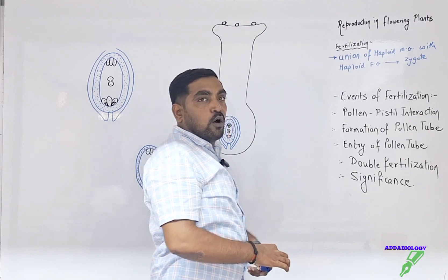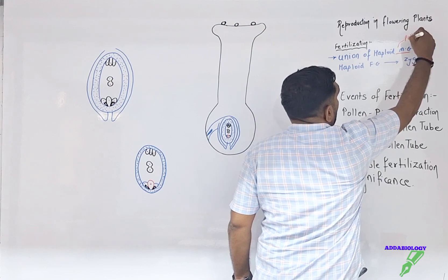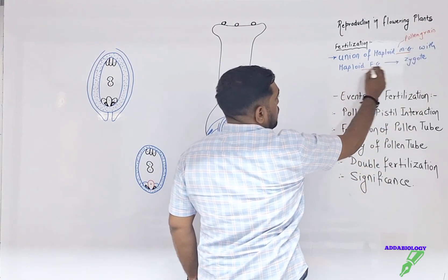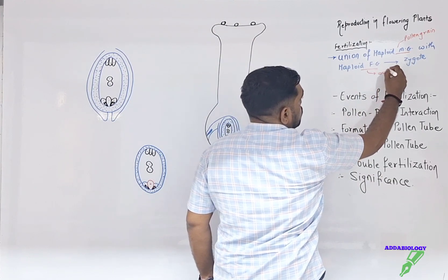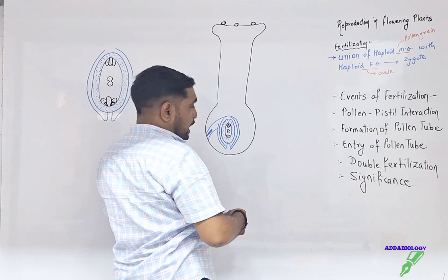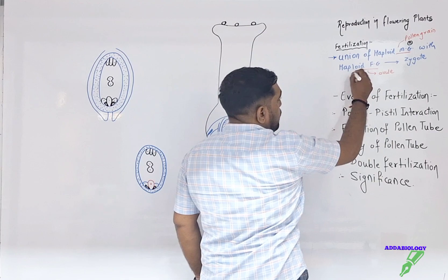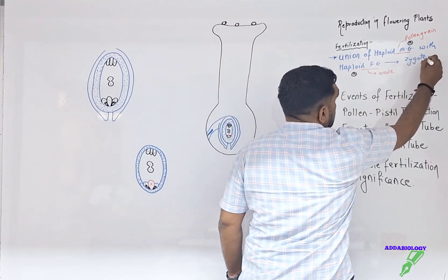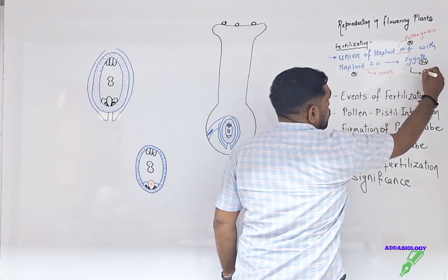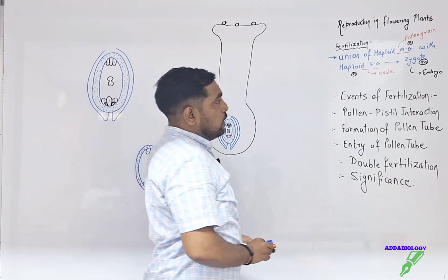Whenever we talk about the male gamete in the case of plants, it comes from the pollen grain, and the female gamete comes from the ovule. When these male and female gametes unite, they form a zygote. The male gamete is haploid and the female gamete is haploid, so the zygote formed is diploid (2n). This zygote afterwards develops into an embryo.